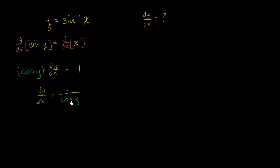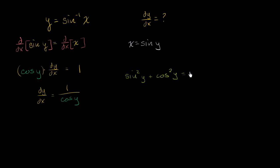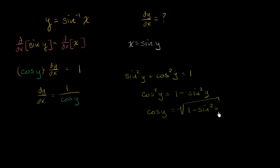This still isn't satisfying because the derivative is in terms of y, so let's re-express it in terms of x. We already know that x is equal to sine of y. If we can rewrite the denominator — instead of cosine of y — using trigonometric identities in terms of sine of y, we'll be in good shape. From the Pythagorean identity, sine squared of y plus cosine squared of y equals one. Solving for cosine of y, we get cosine squared of y equals one minus sine squared of y, so cosine of y equals the principal root of one minus sine squared of y.